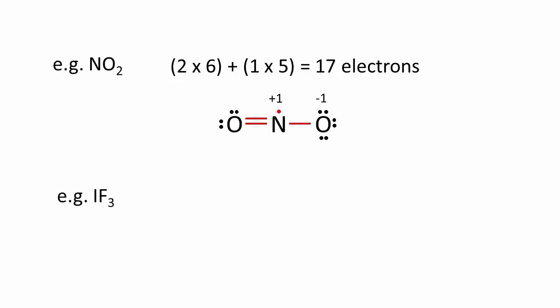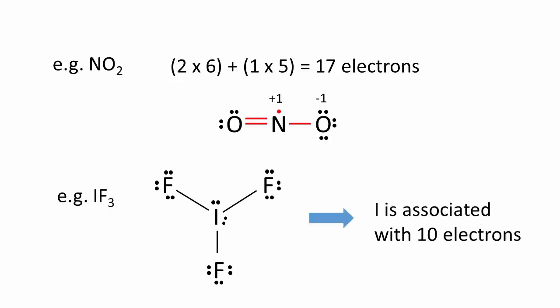Finally, for atoms of the third period such as phosphorus and sulfur and beyond, eight electrons are no longer an absolute maximum, as 3D orbitals allow these atoms to take on more electrons. An octet is always good, but when necessary, these atoms have no problem taking on 10 or 12 electrons, as in the following structures.